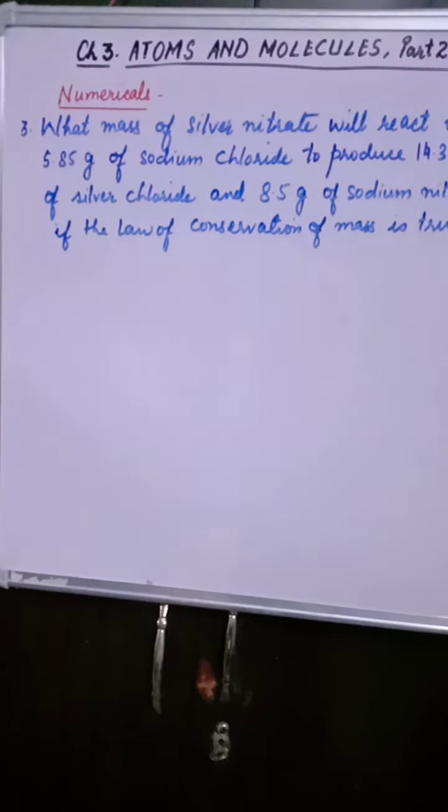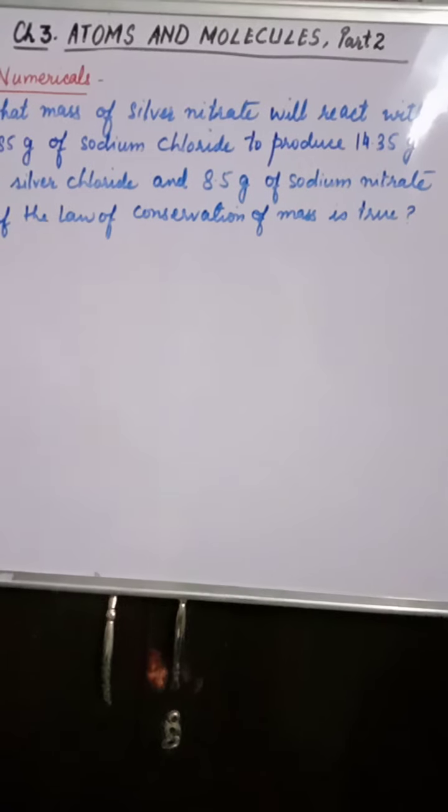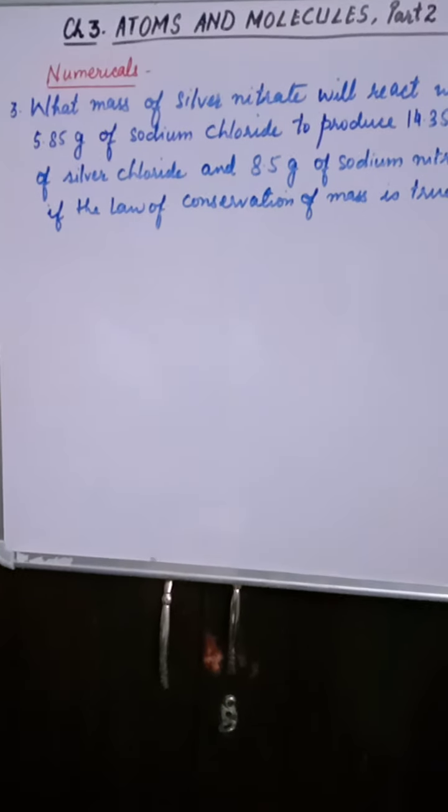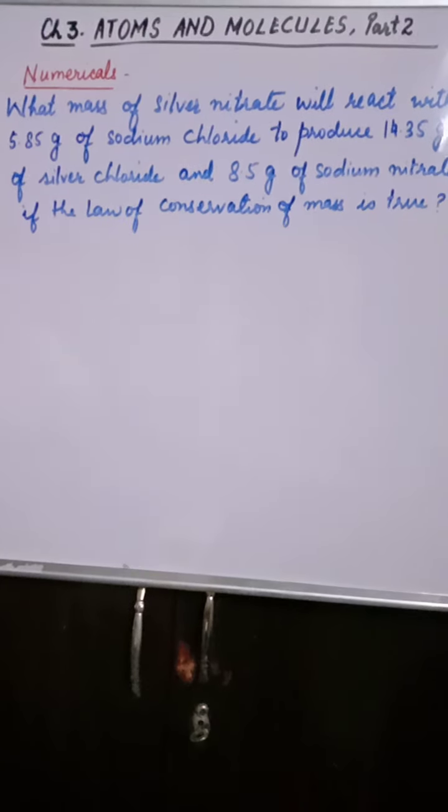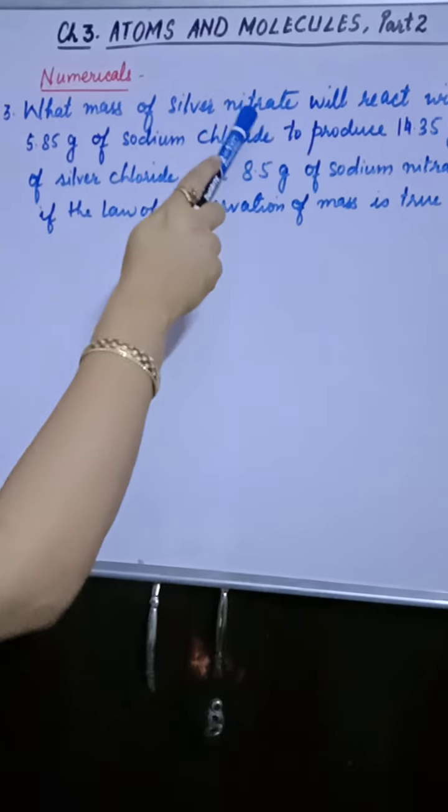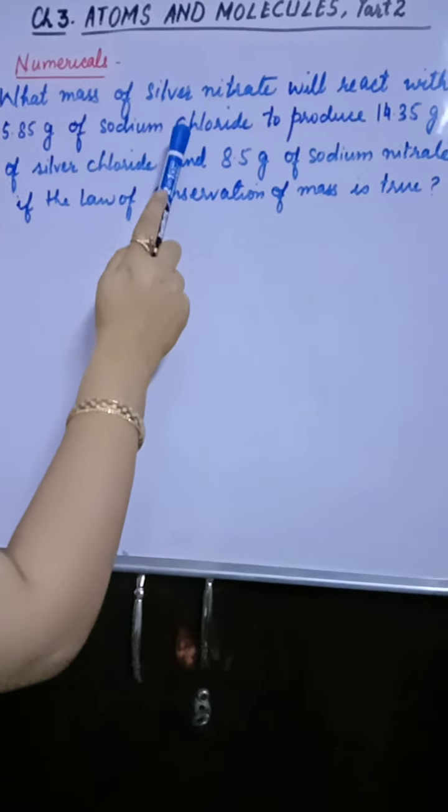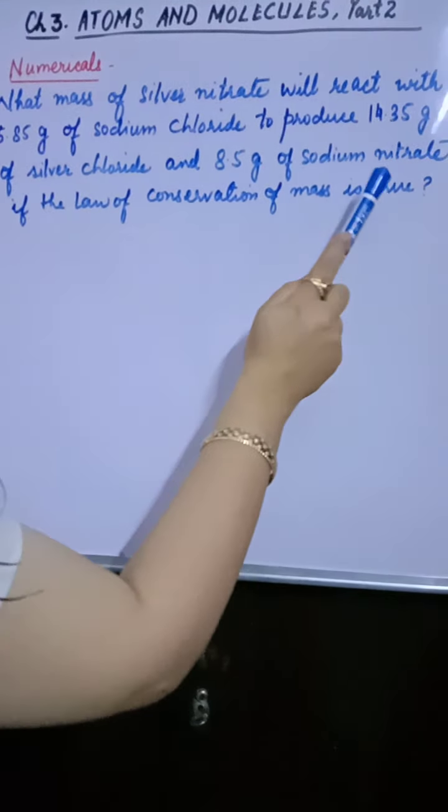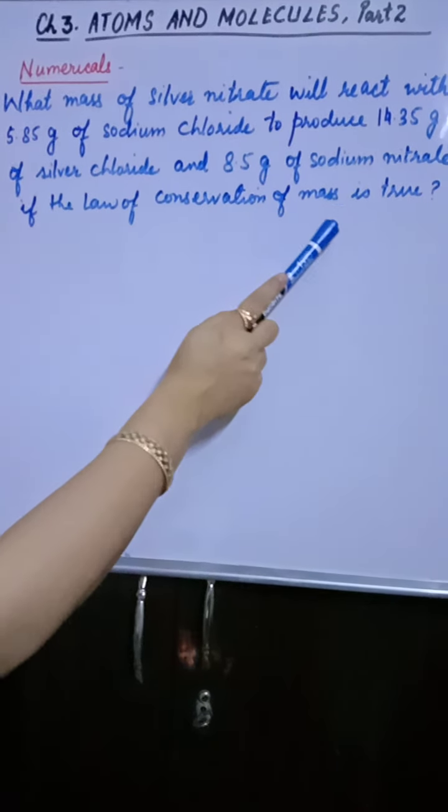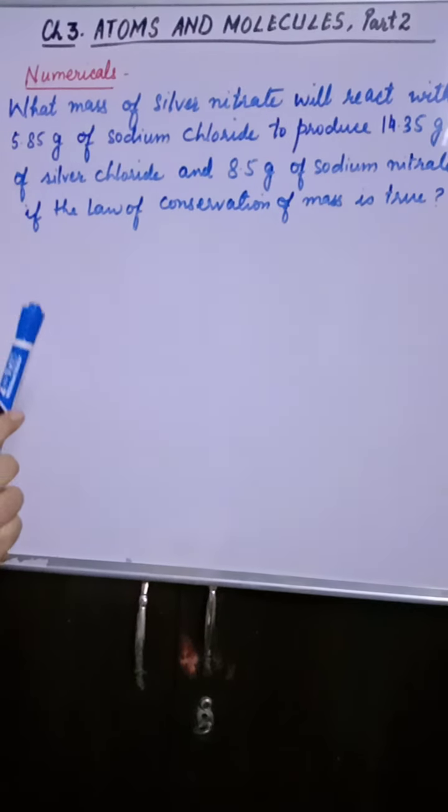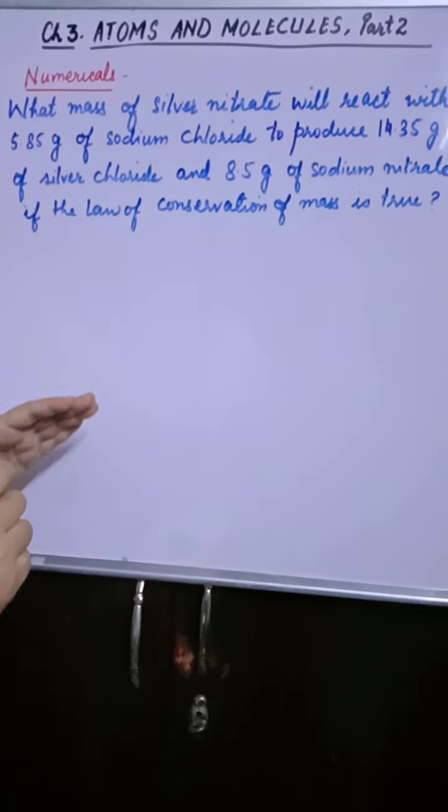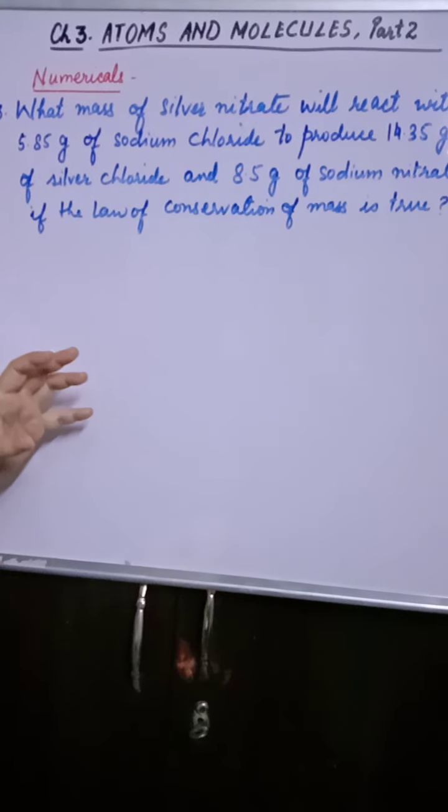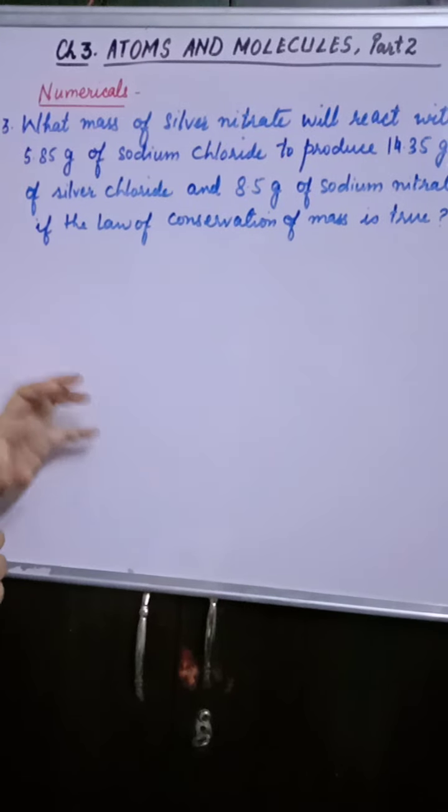Good morning, we are going to solve numericals based on law of conservation of mass again. This is the third numerical that I am doing and we will have at least four numericals on law of conservation of mass so that the concept will be clear to you. Right, for this I selected this numerical also. If you will read the question twice, then the concept of reactants and products will be very clear to you. You need to understand the language of the question.